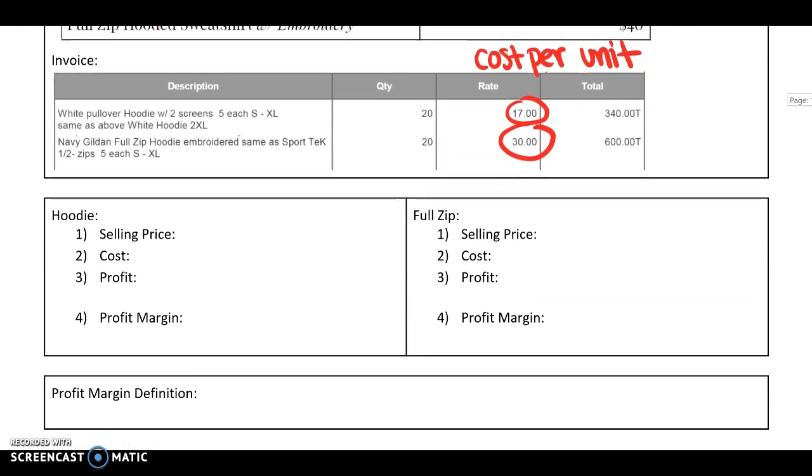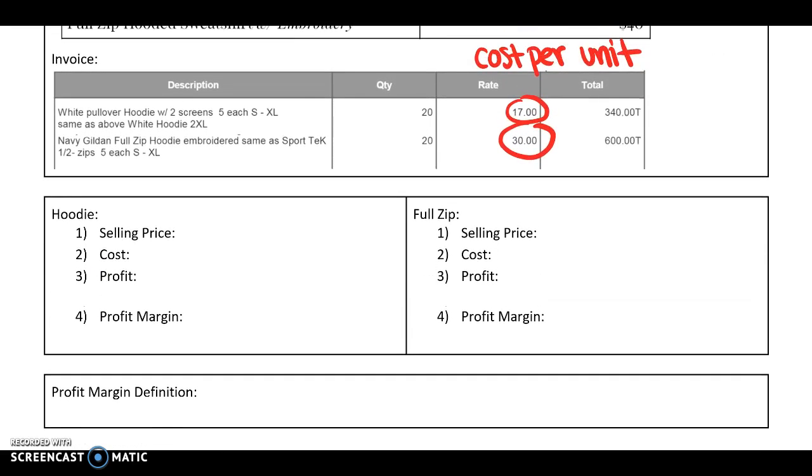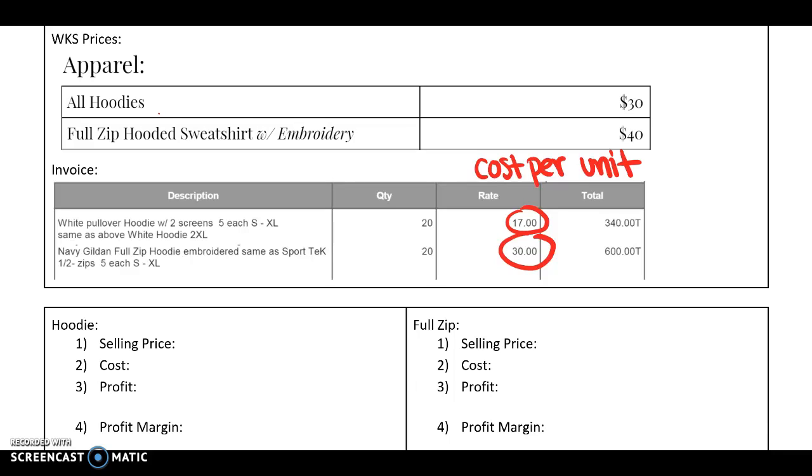Let's fill out this chart below so we can calculate profit and then learn what a profit margin is. So this is just a review, but let's write this all out. For a hoodie, what is our selling price? Selling price is what we're selling to the customers for. And the hoodie is $30, whereas the full zip is $40. They're a little bit nicer. They have some embroidery so they cost more. So our cost is how much we paid for each hoodie. We'll do cost per unit, I should say. Cost per unit.